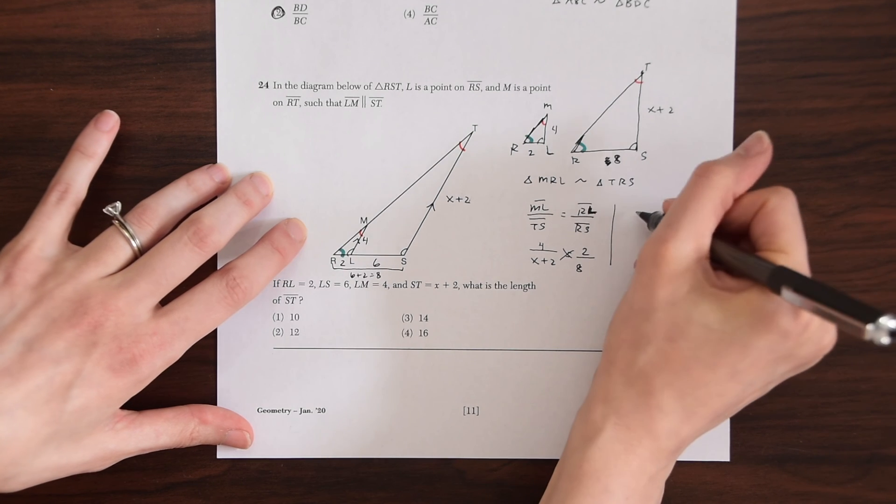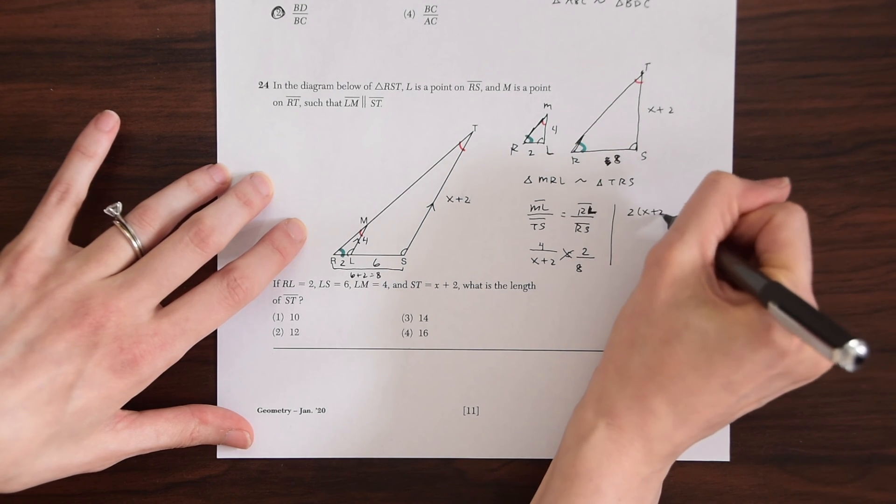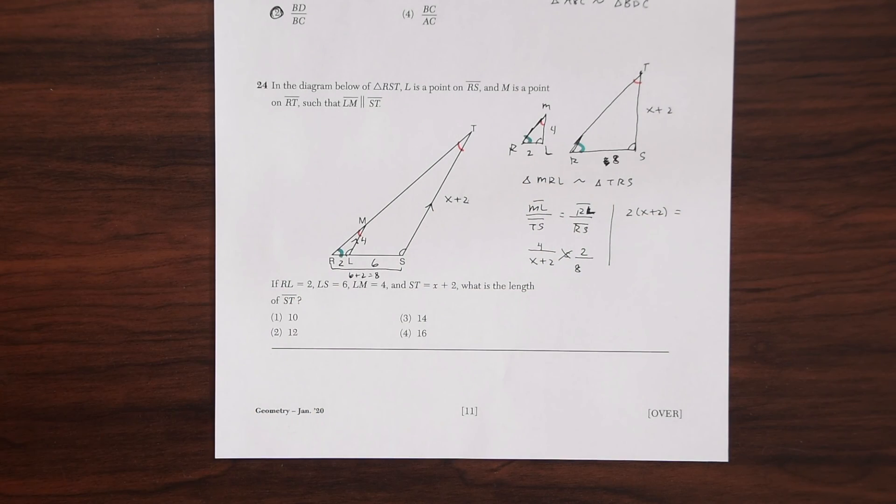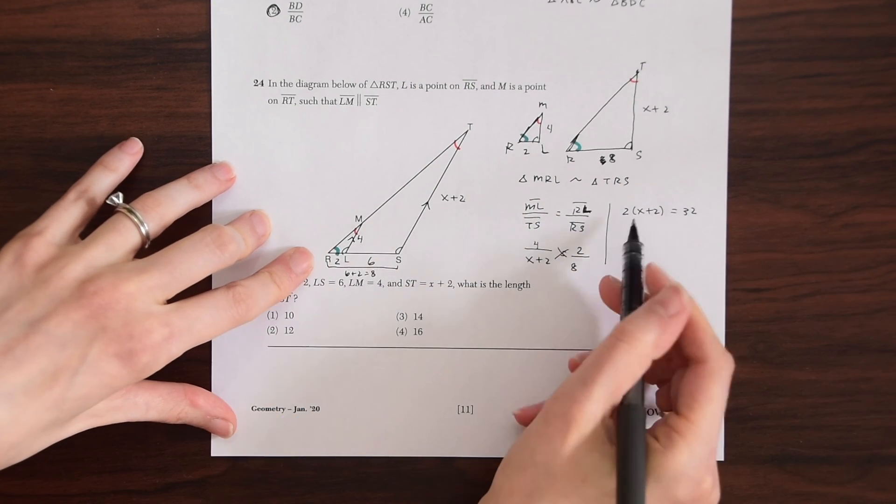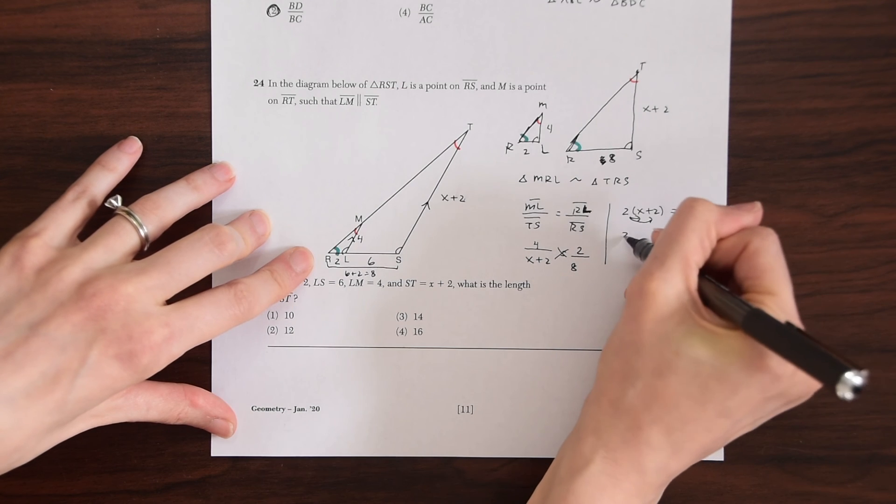So when we do that, we're going to get 2 times X plus 2 is equal to 32. We can distribute this 2.